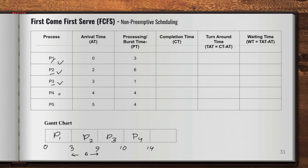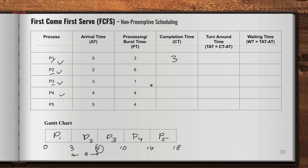P4 is done. The last process is P5. P5 runs for 4 units of time, so 14 plus 4 equals 18. That's how the Gantt chart is prepared. Now we calculate the completion time: P1 completed at 3, P2 completed at 9, P3 completed at 10, P4 completed at 14, and P5 completed at 18.